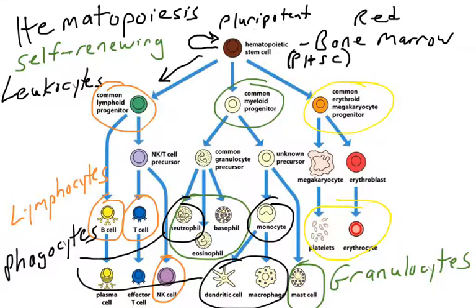We're not going to focus on the erythroid lineage because it produces red blood cells and platelets, which play little role in the immune system. These immune cells are briefly introduced in chapter one, and we will go into much greater detail in future chapters.